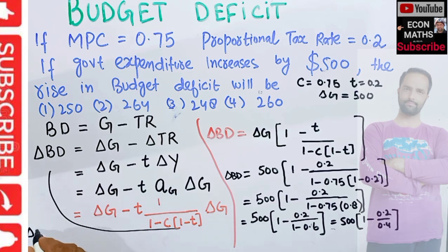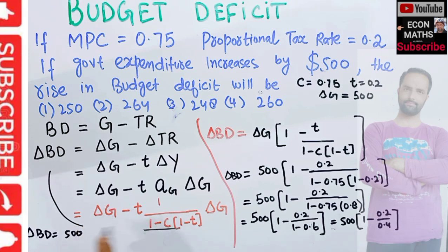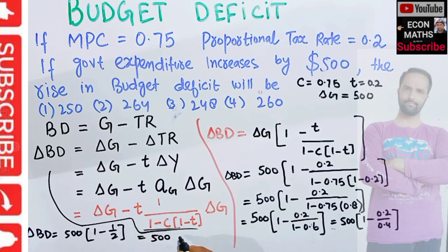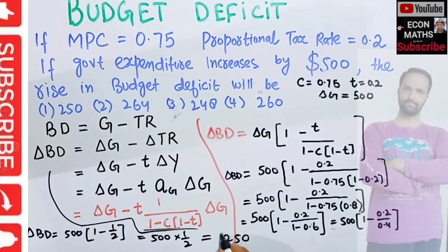Change in budget deficit equals 500 times (1 minus 1/2), which is 500 times 1/2, giving us 500/2 = 250. So our budget deficit will increase by 250.